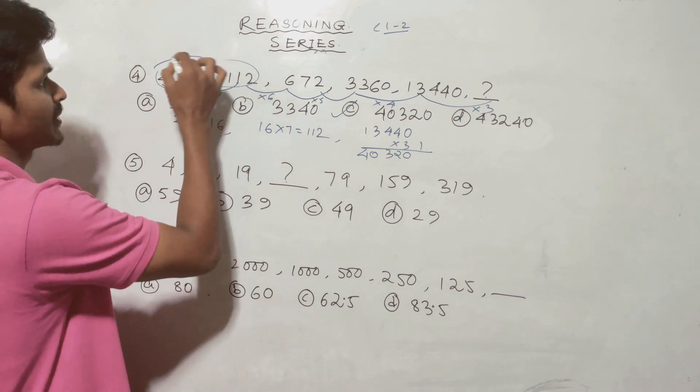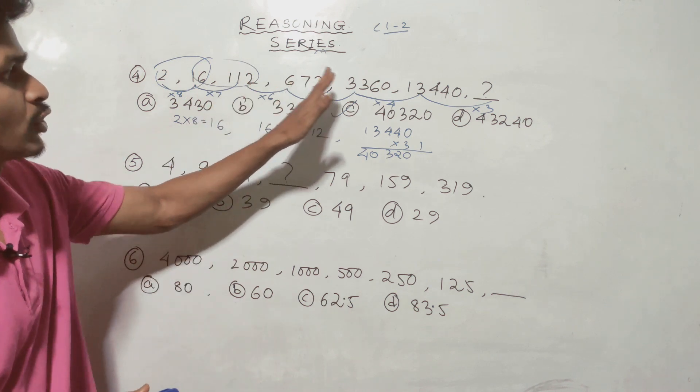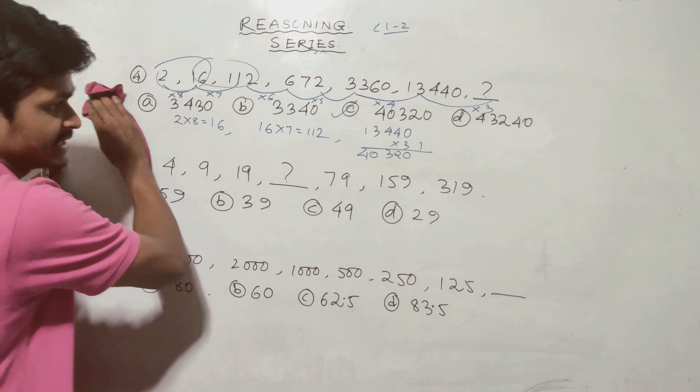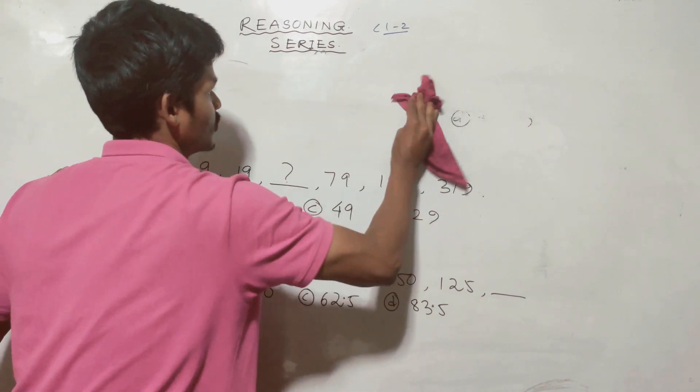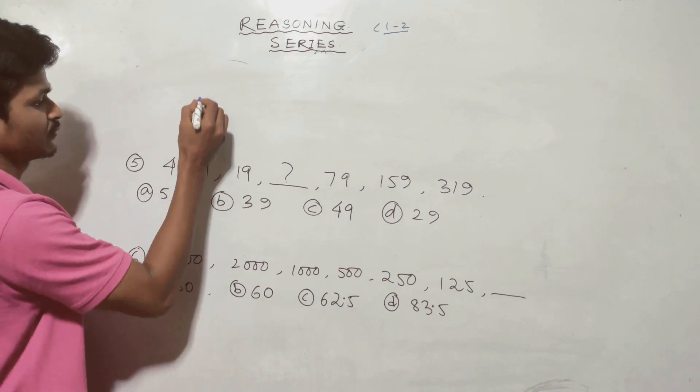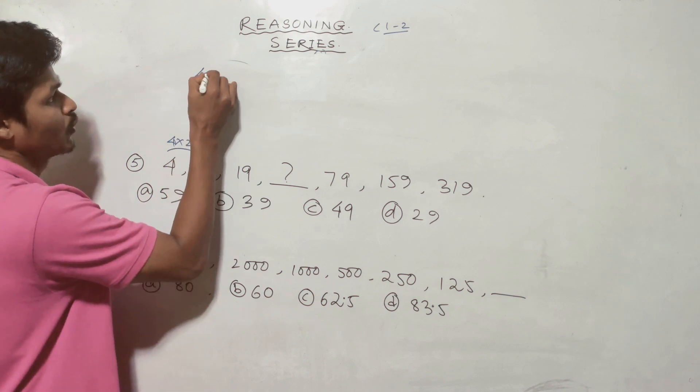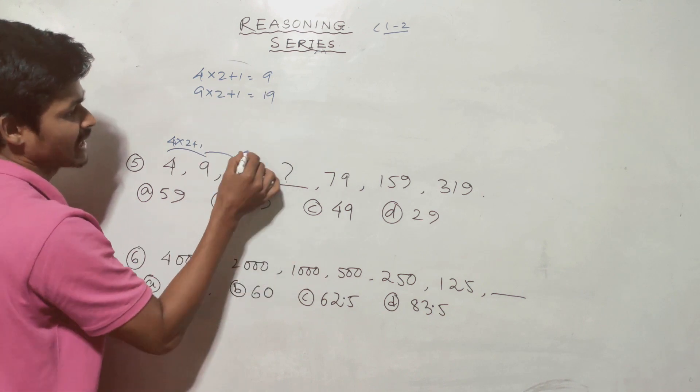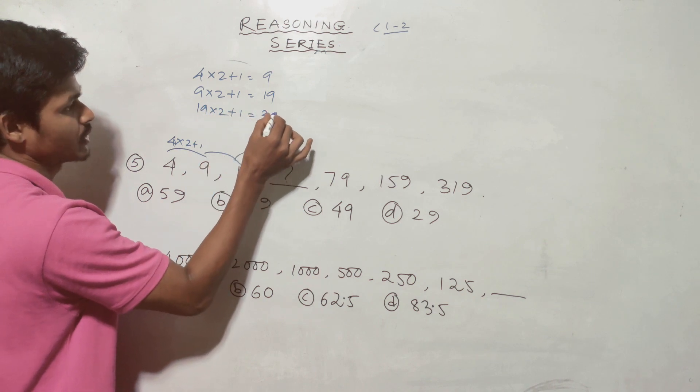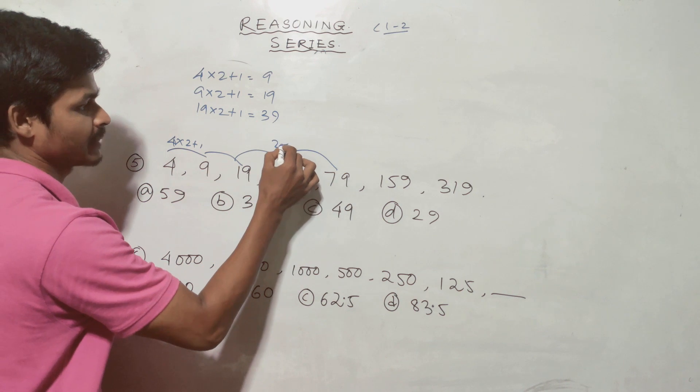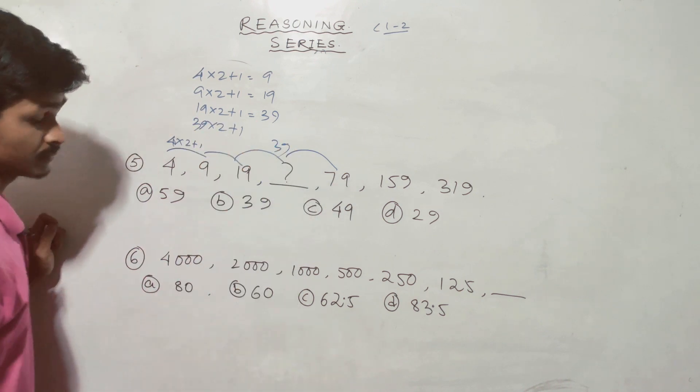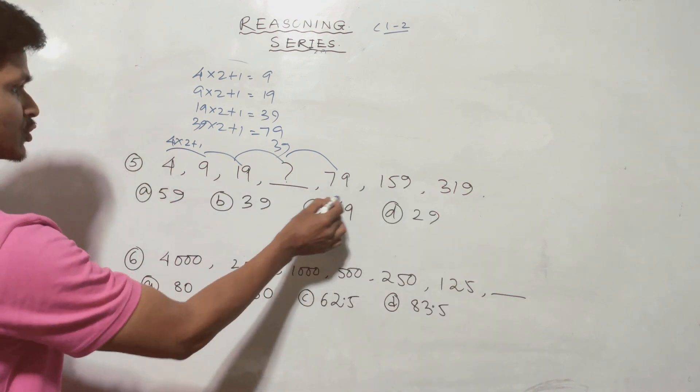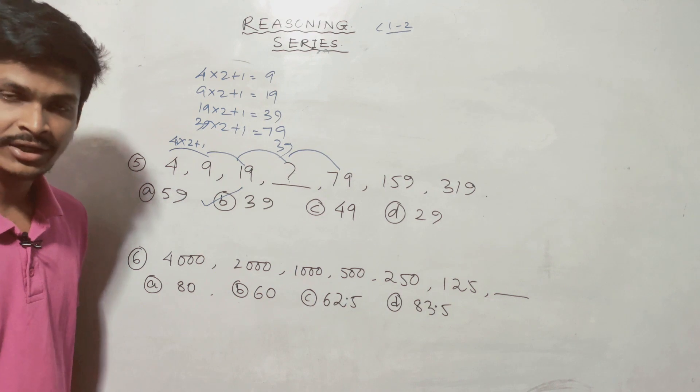Next question: 4, 9, 19, 79. I will do the last, then I will do 4. 4 into 2 plus 1 is 9. 9 into 2 plus 1 is 19. 19 into 2 plus 1 is 39. 39 into 2 plus 1 is 79. The answer is option B, 39.